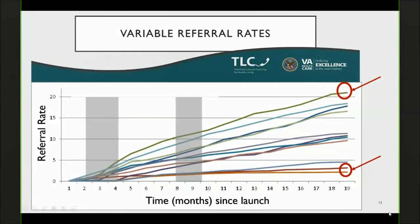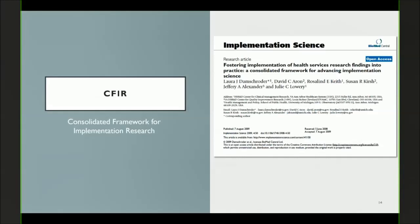I'll also do a lighter touch on another case: a published study by Varsi and colleagues of an internet-based patient-provider communications portal being implemented in five hospital units within Norway. For the TLC implementation, this graph shows time from left to right and the pace or rate of referrals of patients to the TLC intervention. By the end of the pilot, there was wide diversity — the site with the highest referral rate had seven times the number of referrals as the sites with the lowest. Our essential question is: why was this?